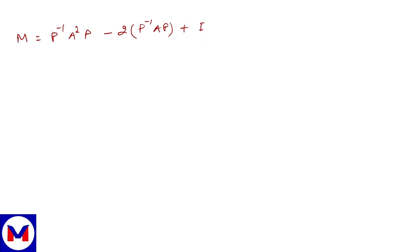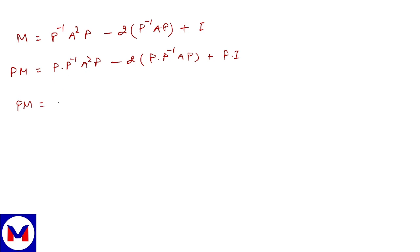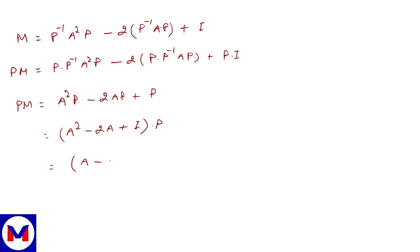Now we use left multiplication by P to reduce P inverse. Multiplying by P on the left: PM equals P into P inverse times A squared P, minus twice P into P inverse times AP, plus P into I. This becomes PM equals A²P minus 2AP plus P, which equals A² minus 2A plus I, into P, and this is (A minus I) whole squared into P. So PM equals (A - I)² · P.